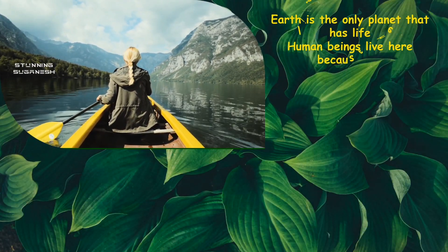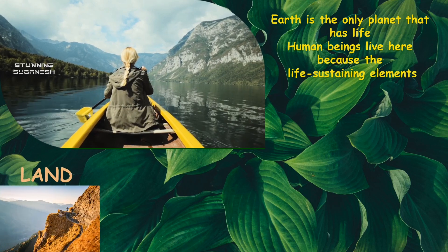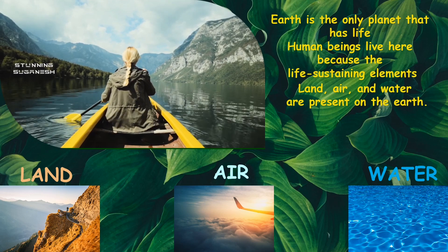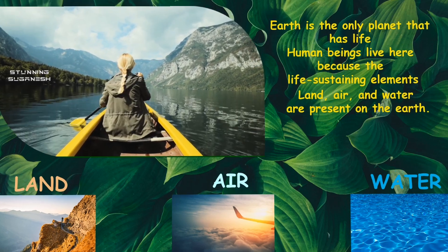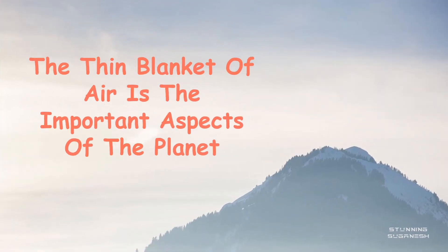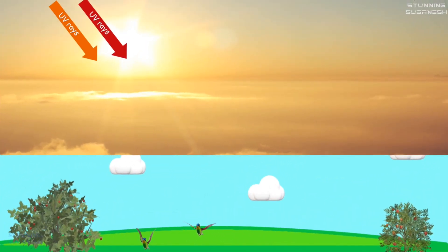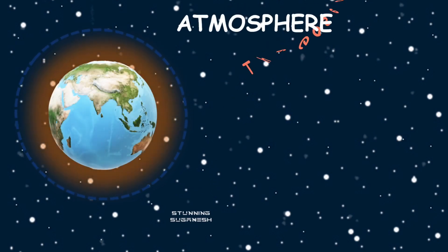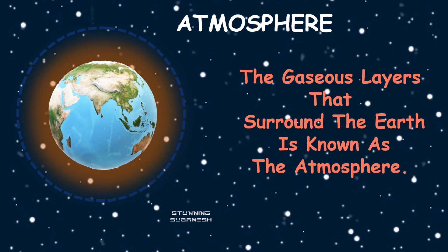Earth is the only planet that has life. Human beings live here because the life-sustaining elements — land, air, and water — are present on the Earth. The thin blanket of air is an important aspect of the planet. The atmosphere protects us from harmful sun rays. The gaseous layer that surrounds the Earth is known as the atmosphere.